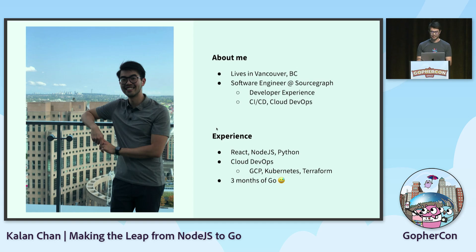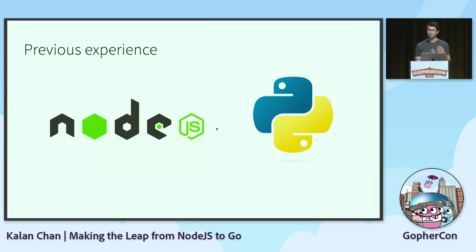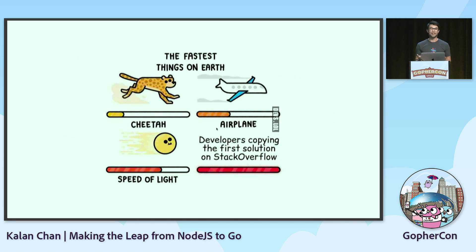Fun fact about myself: I've only learned Go about three months ago, so pretty new to it. My previous experiences have always been in Node.js or Python — they were really my safe havens for anything backend related. I didn't have to worry about structures, data types, or interfaces, and life was really simple. I could literally Google any problem and find an answer on Stack Overflow.